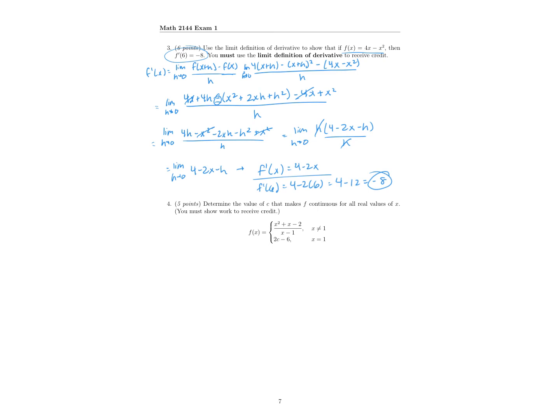On to question 4: we want to determine the value of c that makes f continuous for all values of x. The function f is defined by a rational function for all x not equal to 1. Rational functions are continuous everywhere they're defined, and since it's undefined at x equals 1 — we'd get a denominator of 0 — there's just one point where it's undefined. With the piecewise definition, we have a removable discontinuity there.